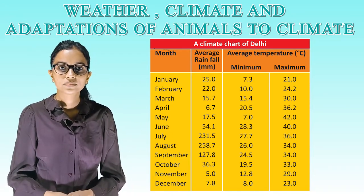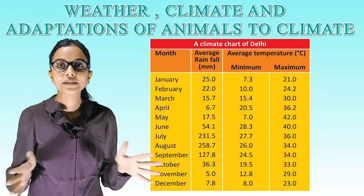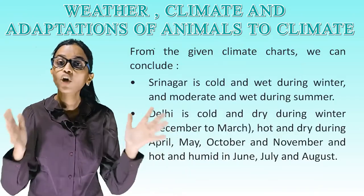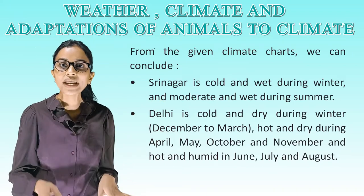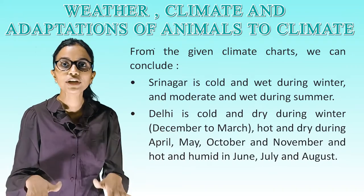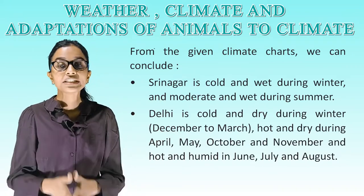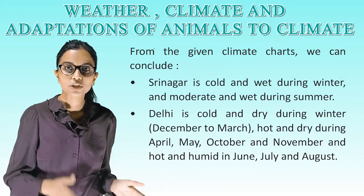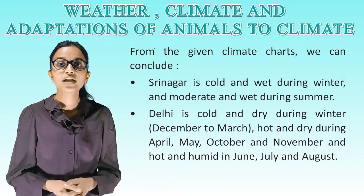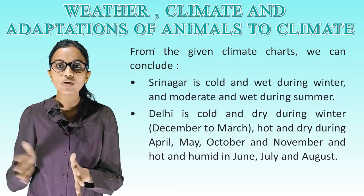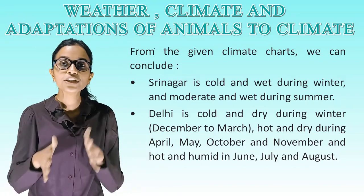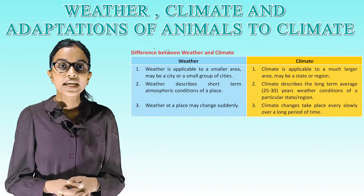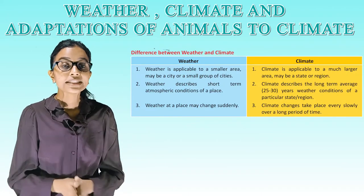From the climatic charts we can conclude: Srinagar is cold and wet during winter, and moderate and wet during summer. Delhi is cold and dry during winter (December to March), hot and dry during April, May, October and November, and hot and humid in June, July and August.